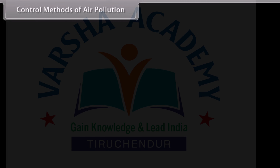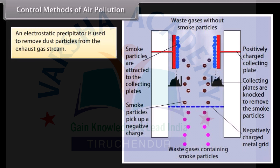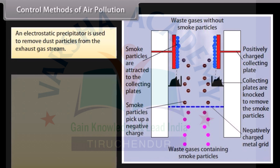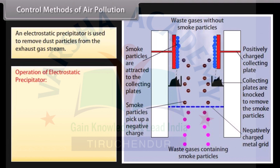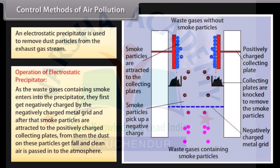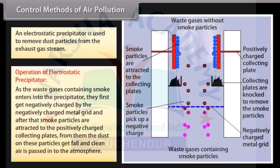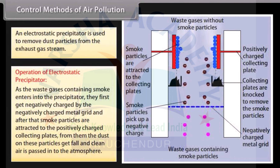An electrostatic precipitator is used to remove dust particles from the exhaust gas stream. As the waste gases containing smoke enter the precipitator, they first get negatively charged by the negatively charged metal grid, and after that, smoke particles are attracted to the positively charged collecting plates. The dust on these particles falls off and clean air is passed into the atmosphere.